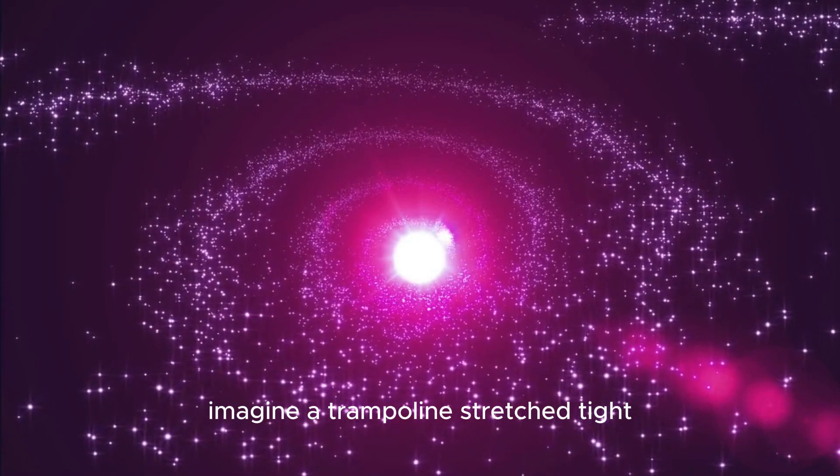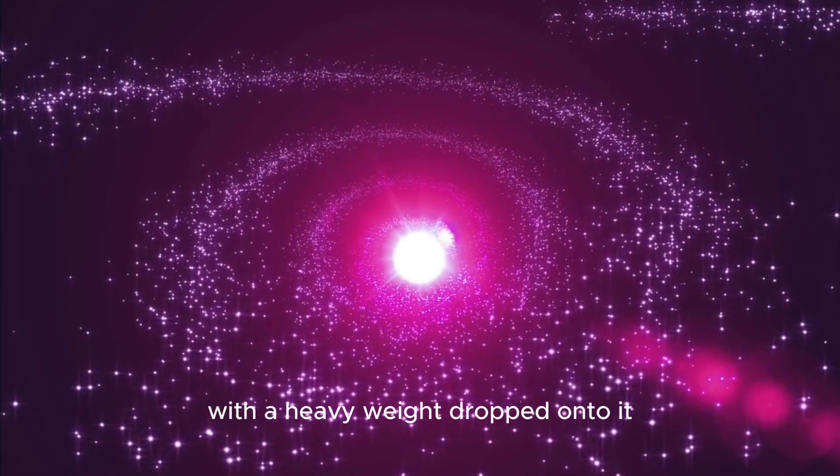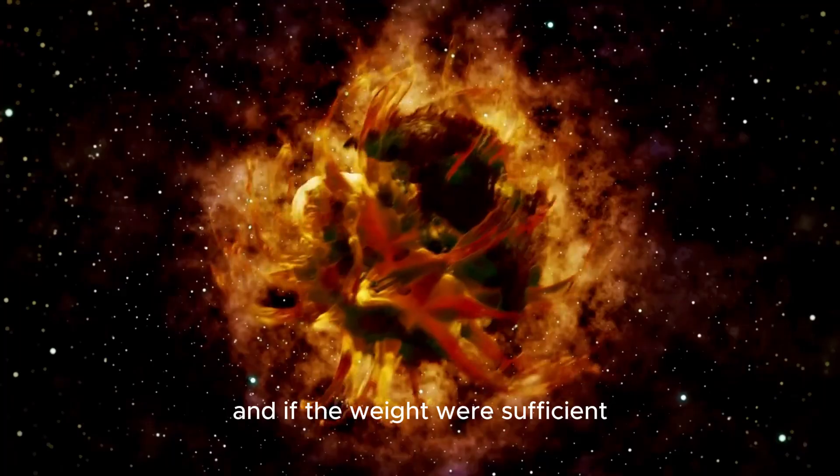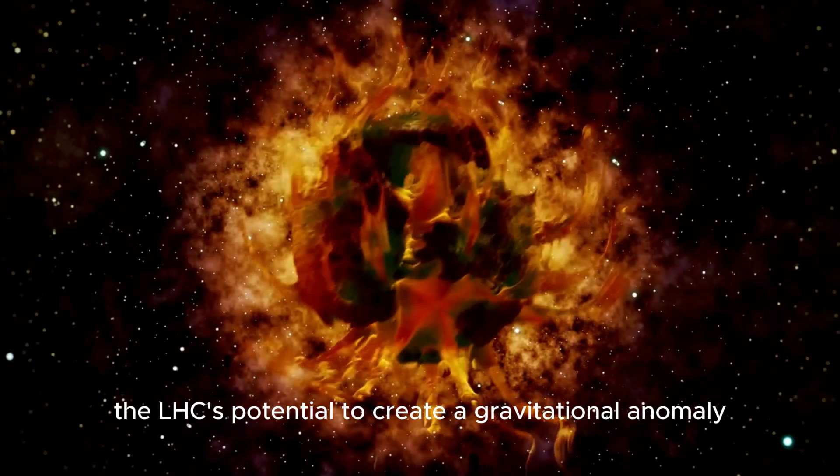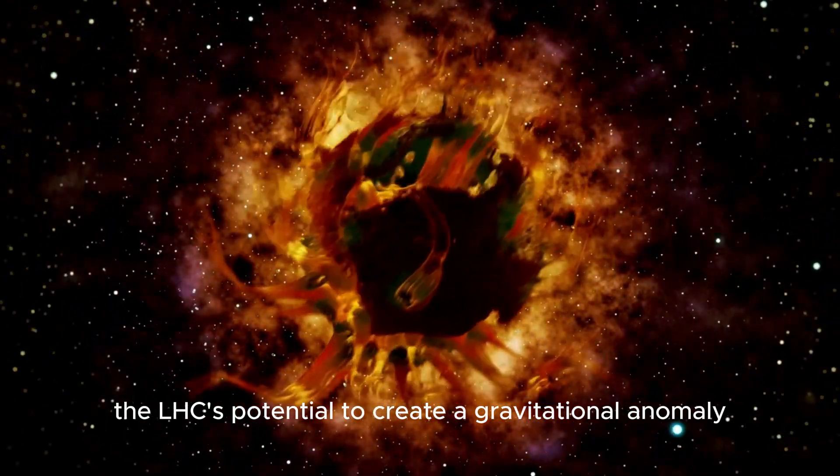Imagine a trampoline stretched tight with a heavy weight dropped onto it. The surface would bend, and if the weight were sufficient, it could create a hole. This analogy illustrates the LHC's potential to create a gravitational anomaly.